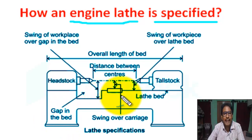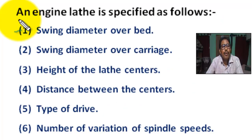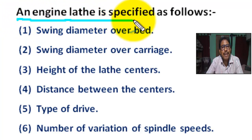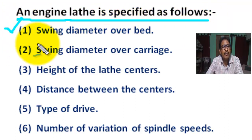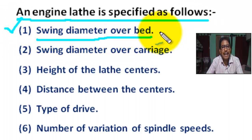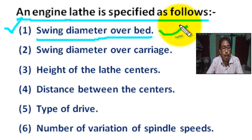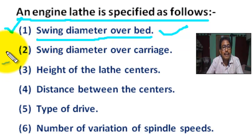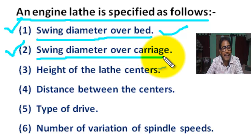An engine lathe is specified as follows. Number one: the maximum diameter that can be rotated over the ways of the bed. Number two: swing diameter over carriage.